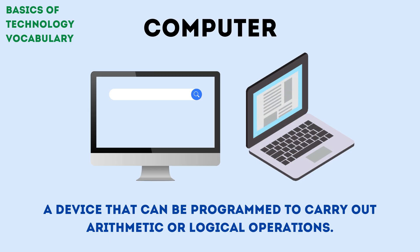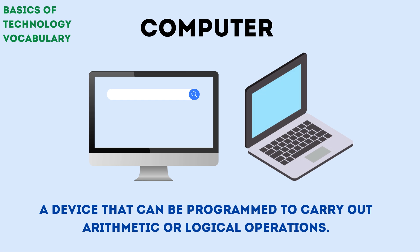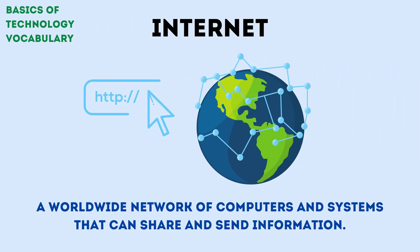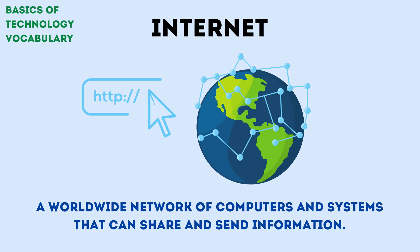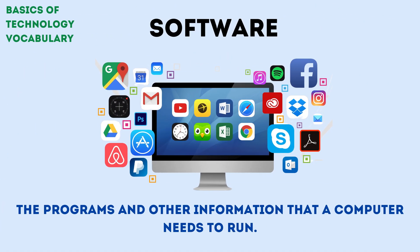A computer is a device that can be programmed to carry out arithmetic or logical operations. The Internet is a worldwide network of computers and systems that can share and send information. Software is the programs and other information that a computer needs to run.